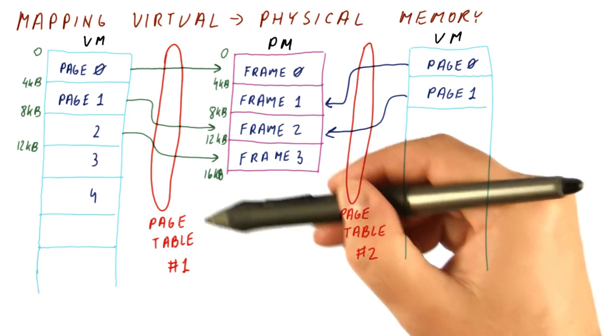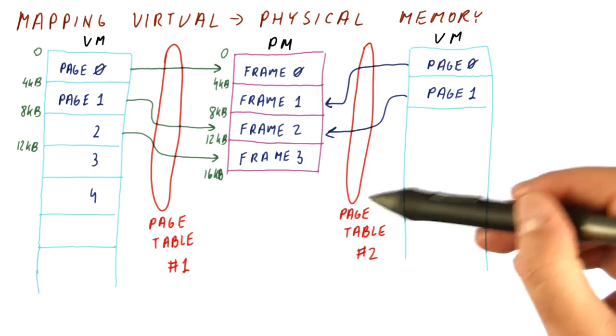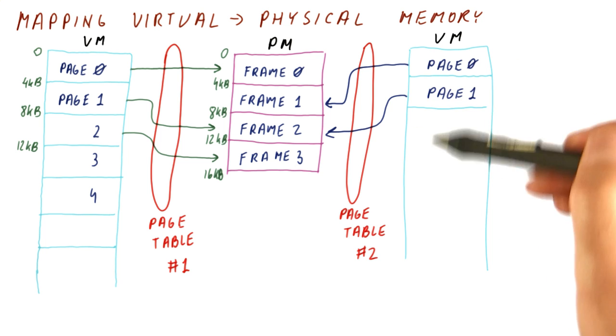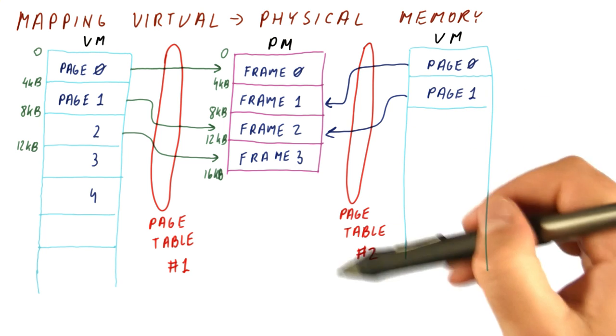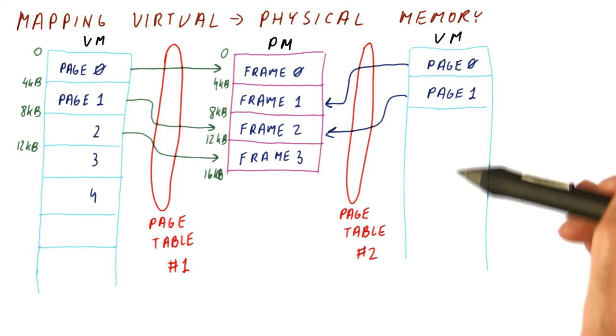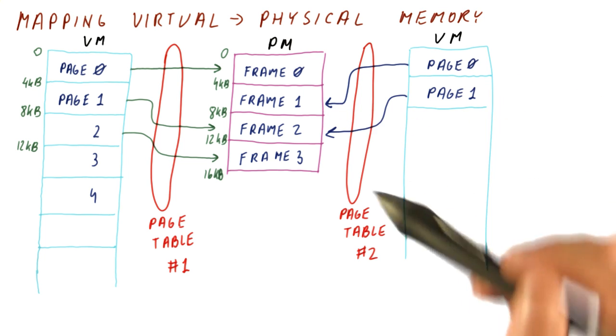This is the page table for this process. Another process with its own idea of virtual memory will have a different page table that says, for each page here, where does it go here?